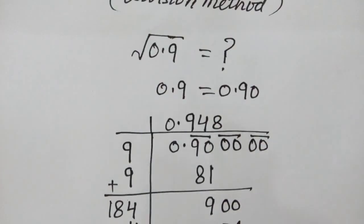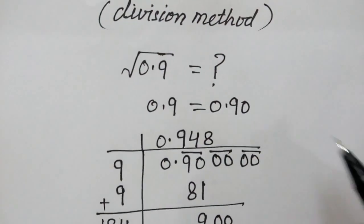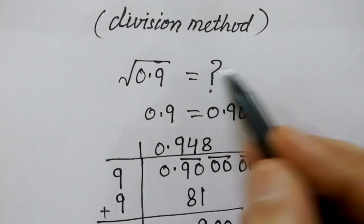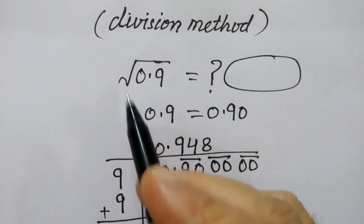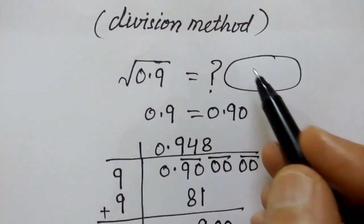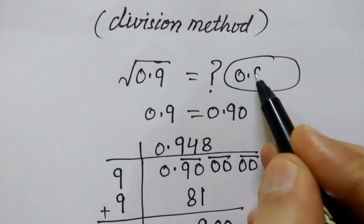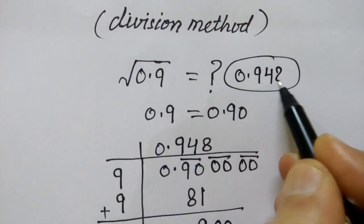Now we have 3 decimal places. So the value of square root of 0.9 is 0.948.